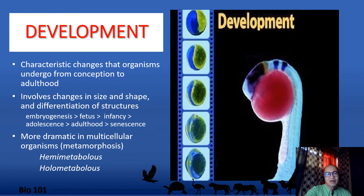All animals undergo a characteristic pattern of bodily and functional changes from conception to adult stage, known as development. These changes involve alteration of size and shape and differentiation of structures and functions towards the adult stage. Development progresses in a series of transformations from fertilization to its final adult form. Development is particularly dramatic in metamorphic animals because one developmental stage is so dissimilar to another. Interestingly, most early stages of development among animals are more similar than the latter stages. This is mainly the field of study in developmental biology.